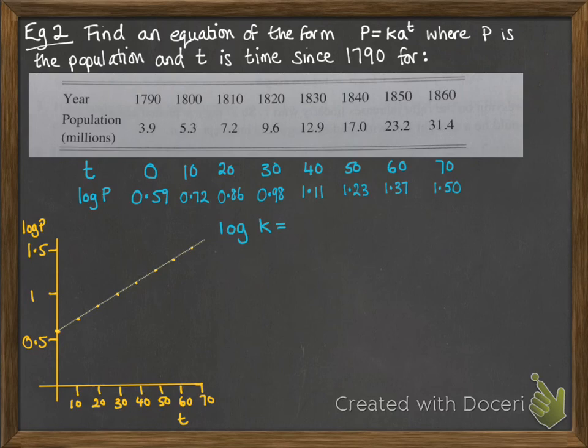Log k is the y-intercept, so that's 0.59 which we can read off of our table when t is 0. Log P was 0.59. So k is 10 to the power of 0.59 which is 3.89.